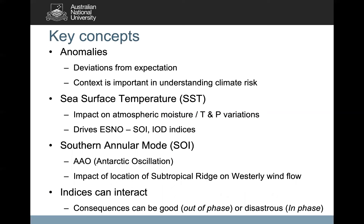It should be ENSO — the Southern Oscillation Index and Indian Ocean Dipole indices. The Southern Annular Mode, also called the Antarctic Oscillation, is based on the impact of the subtropical ridge, its position on the Australian continent and its impact on the westerly wind belt. These indices can act in concert or out of phase — they can have good consequences when out of phase, or disastrous consequences when they're in phase.